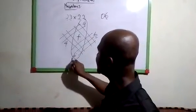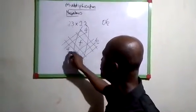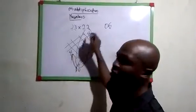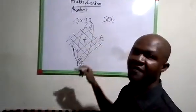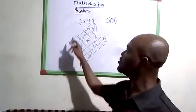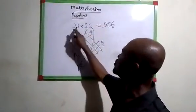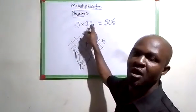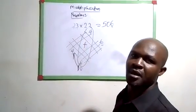Then this 1 here will be added to this 4. If you add 1 to 4, what will you have? 5. So the answer will be 5, 0, 6. That is the multiplication of 23 times 22. We can try another number.